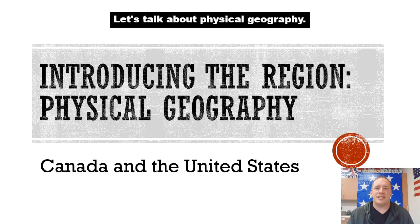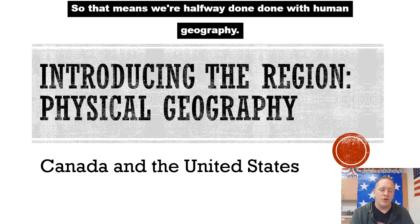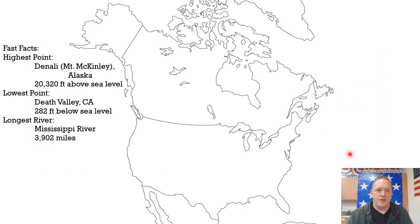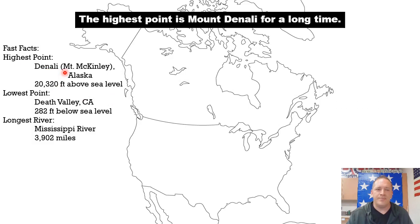Back to the real notes — let's talk about physical geography. So that means we're halfway done with human geography, now moving to physical geography. Some fun facts: the highest point is Mount Denali — for a long time it was known as Mount McKinley, up in Alaska.